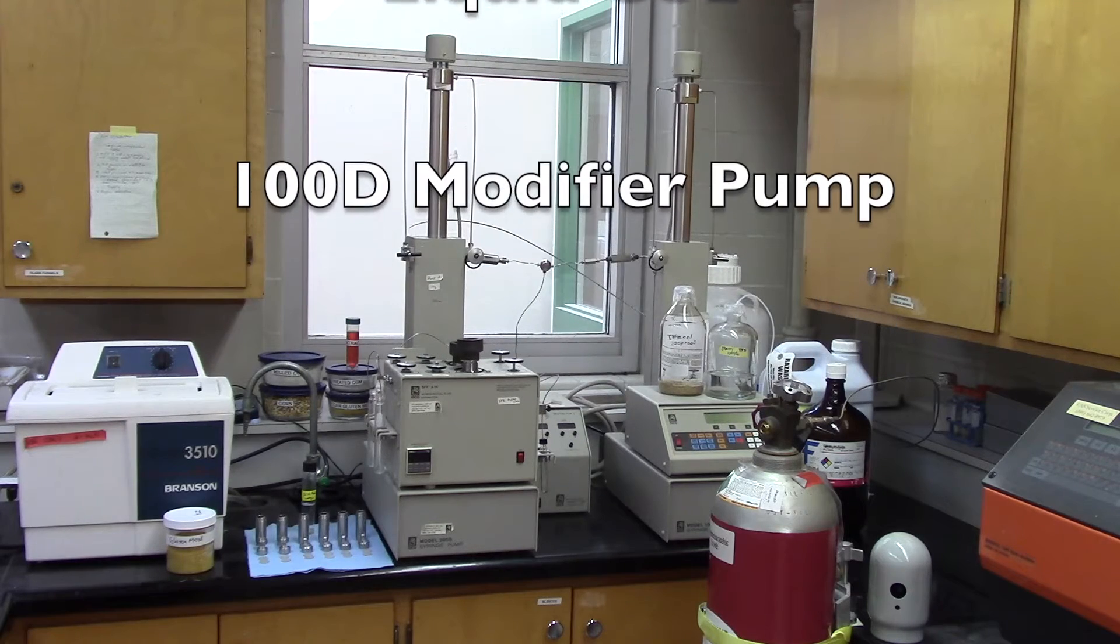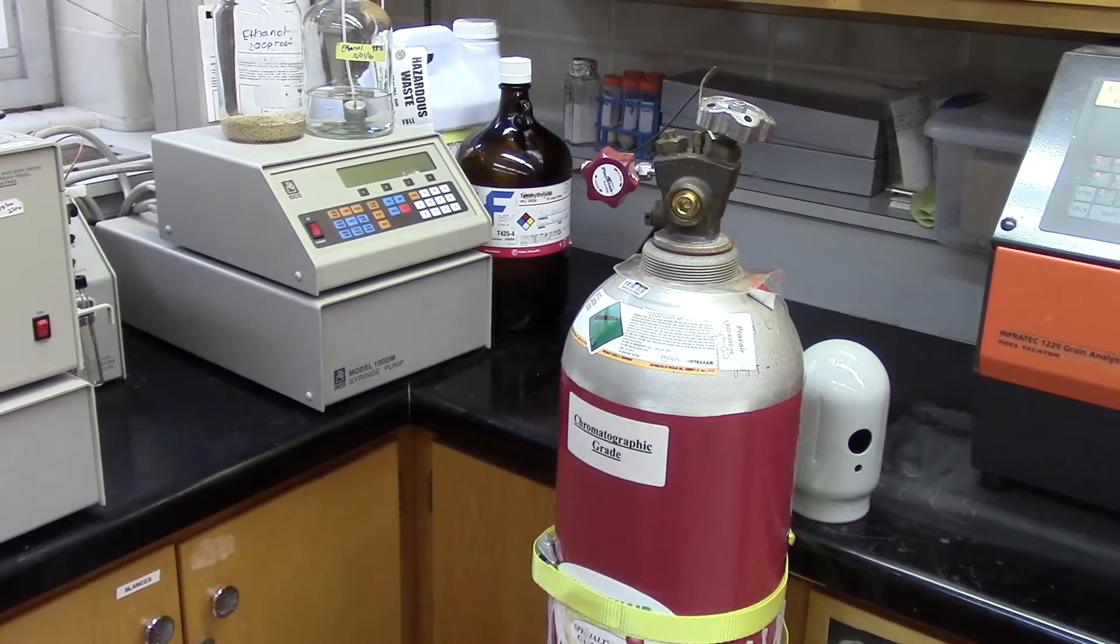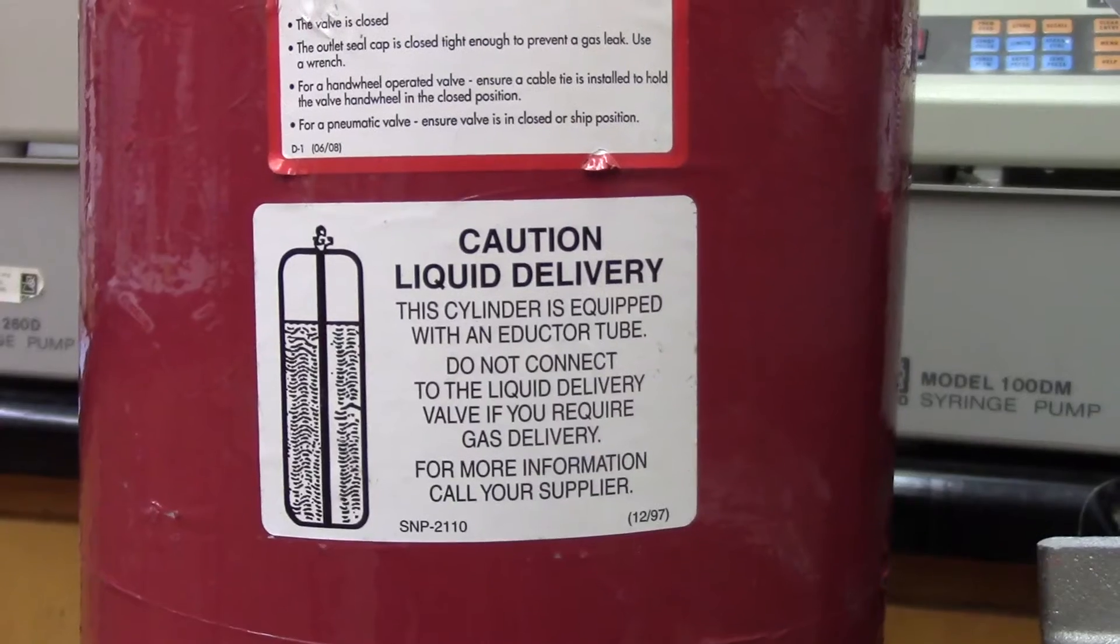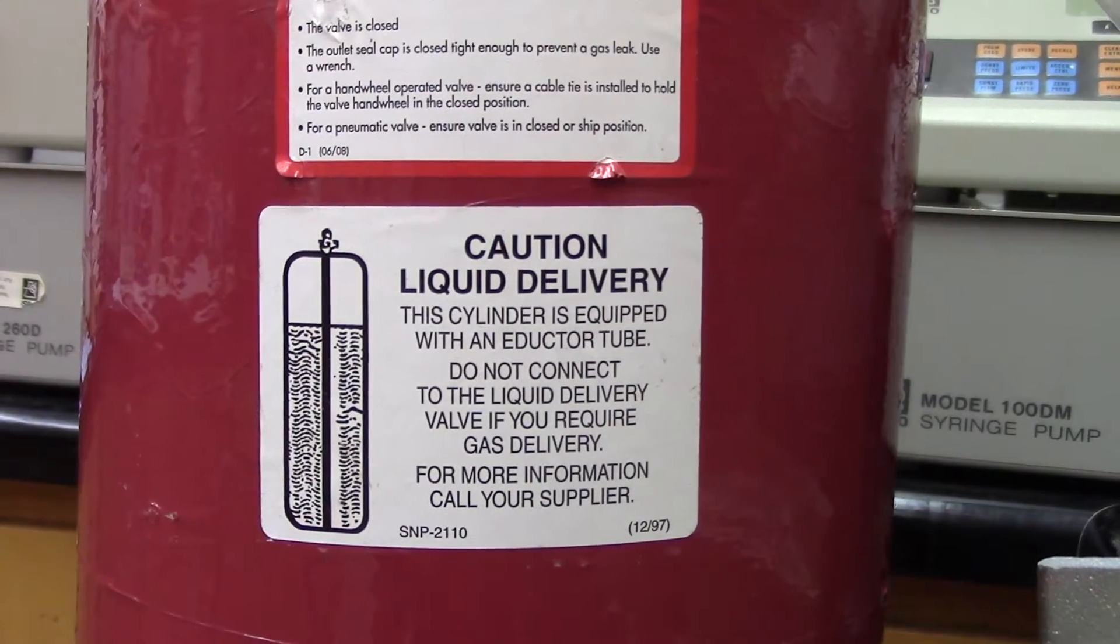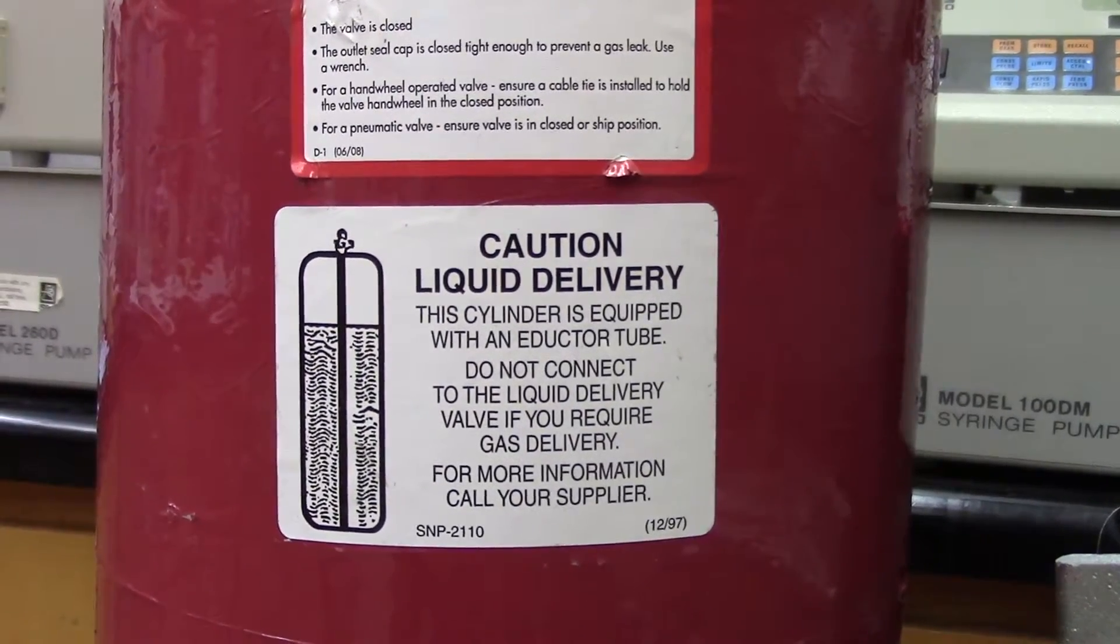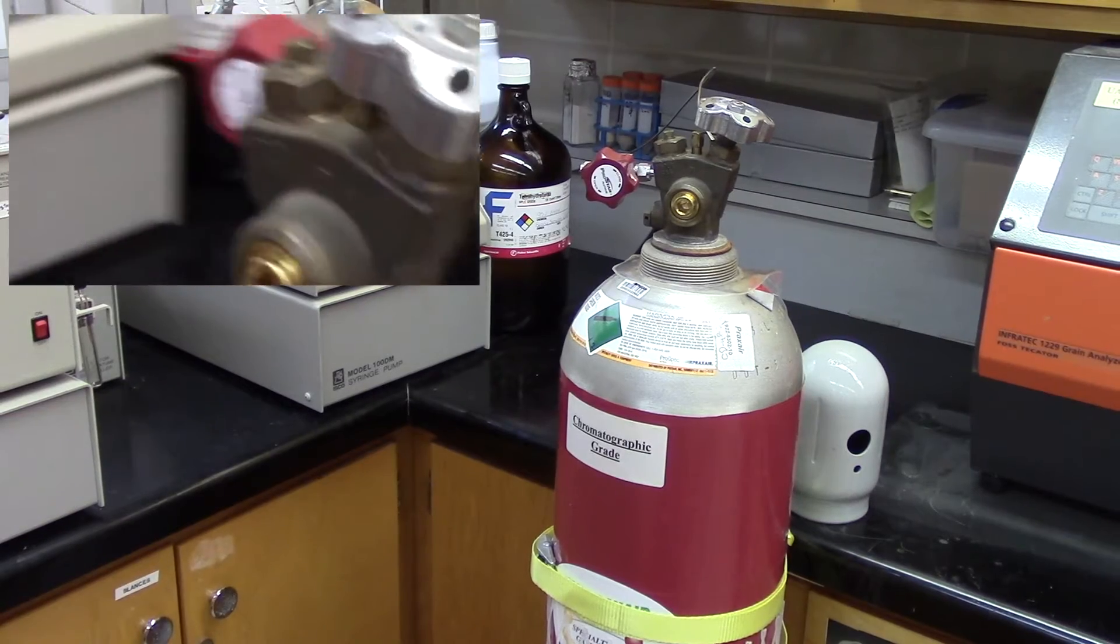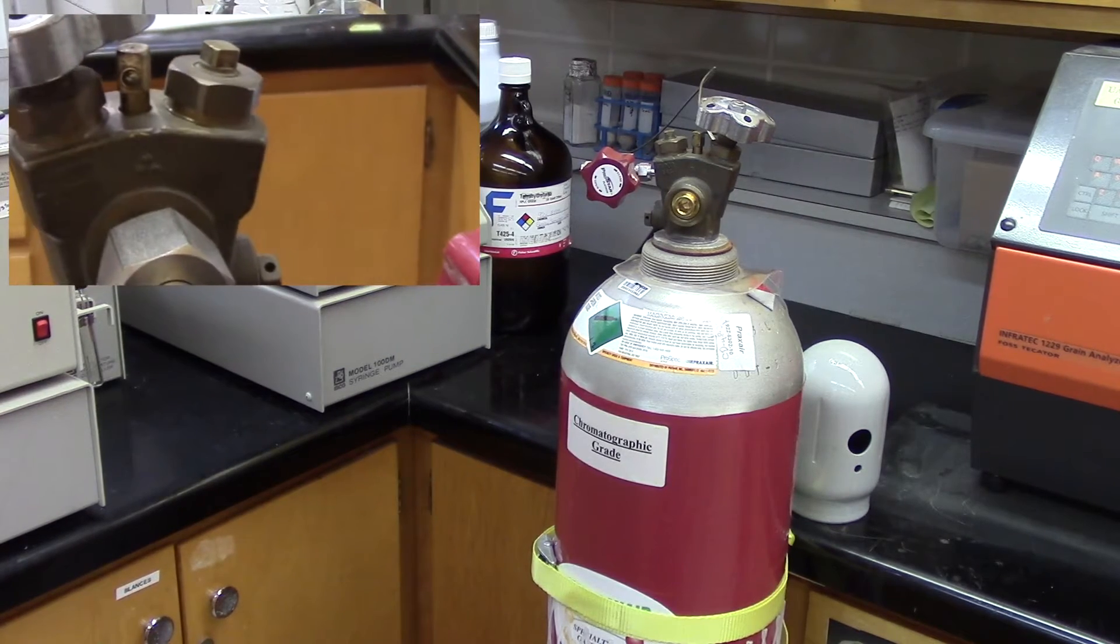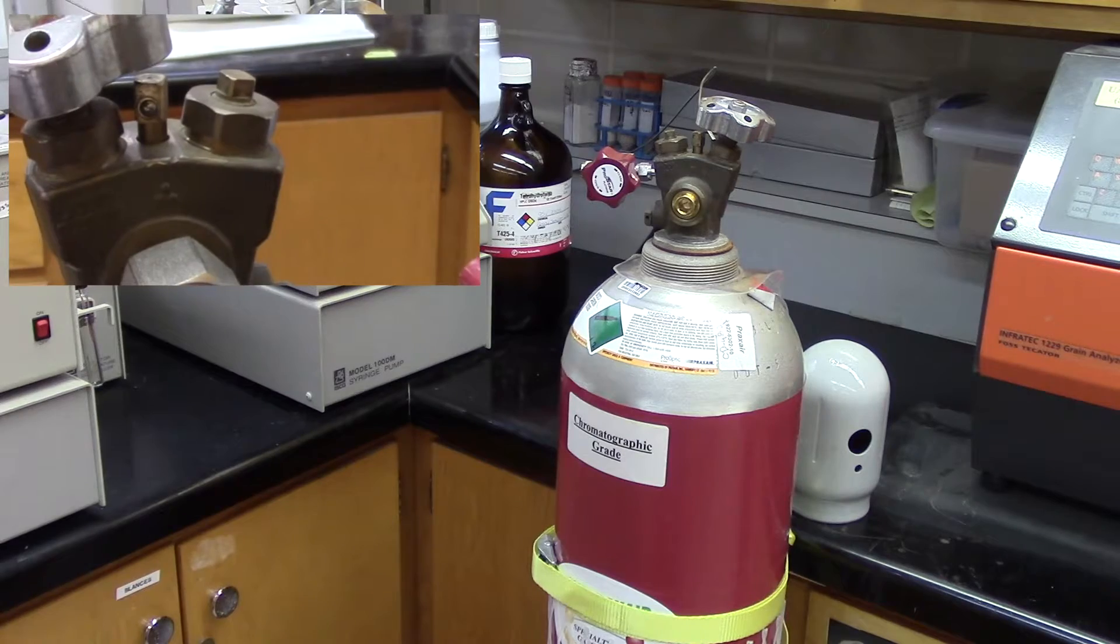It also includes a 100D modifier pump. I'm going to start by showing you the different components of the extractor. This is our CO2 tank. You must use liquid CO2 and it's important that the tank is equipped with a dip tube to utilize the liquid at the bottom of the tank rather than the gas floating on top. You also want to make sure the hand wheel is placed on the right side to access the liquid CO2, as the left side will utilize CO2 gas.